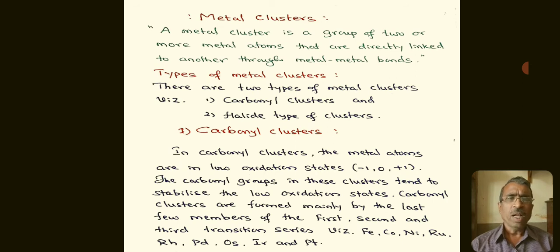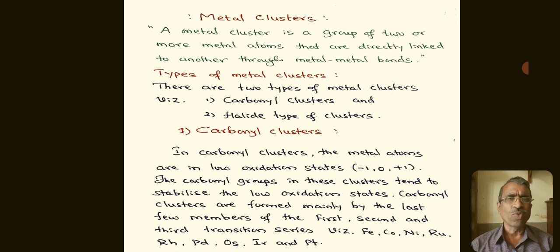Coming to the carbonyl clusters: in carbonyl clusters, the metal atoms are in lower oxidation states, maybe zero or plus one. Very rarely, in very few cases, the oxidation state becomes minus one, and these are very uncommon. The majority of the compounds exhibit zero oxidation state.